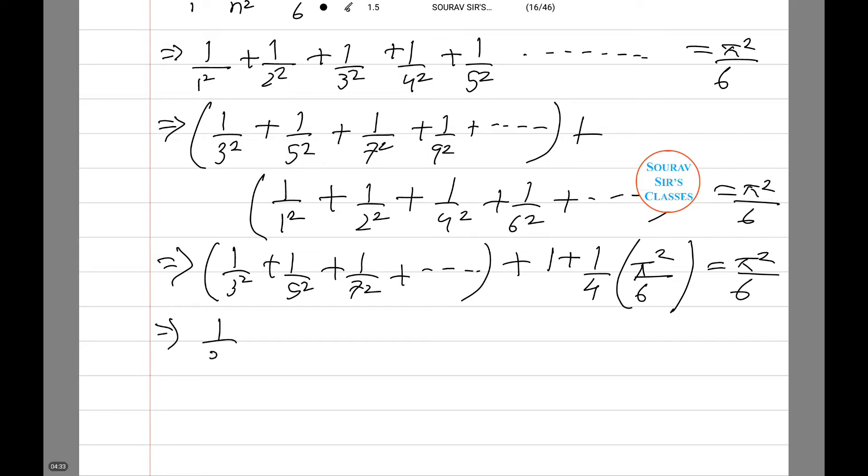Now taking on the odd terms, 1/7² + 1/9² + ... equals π²/6 - π²/24 - 1, taking this whole term on the other side...